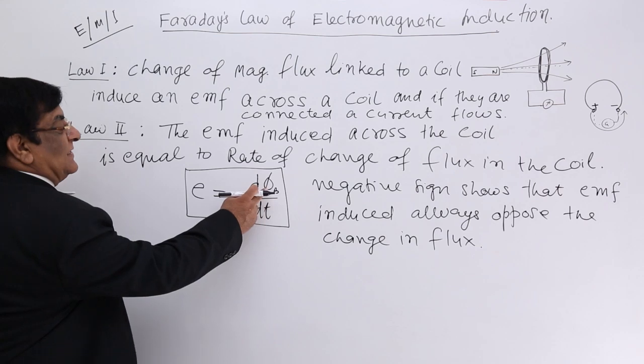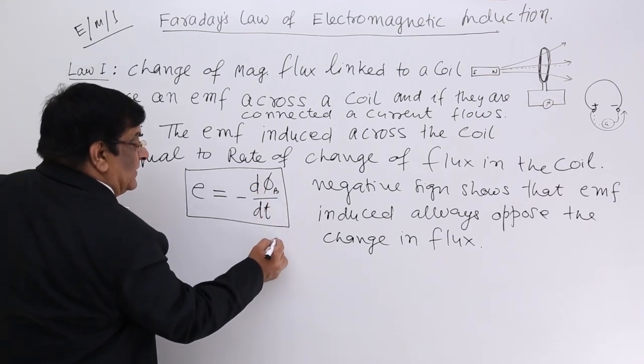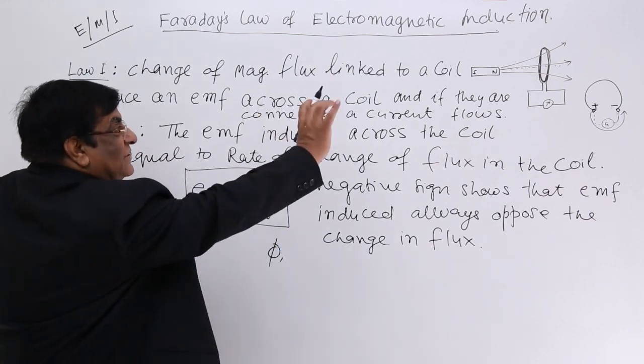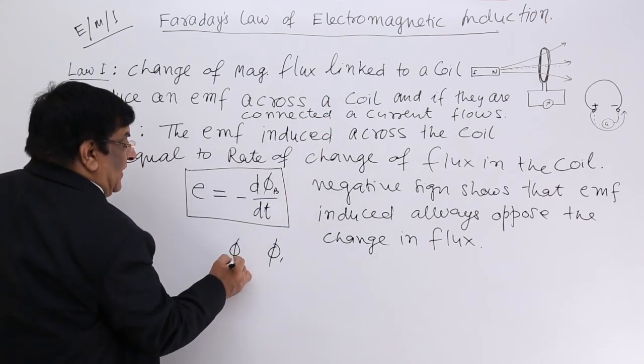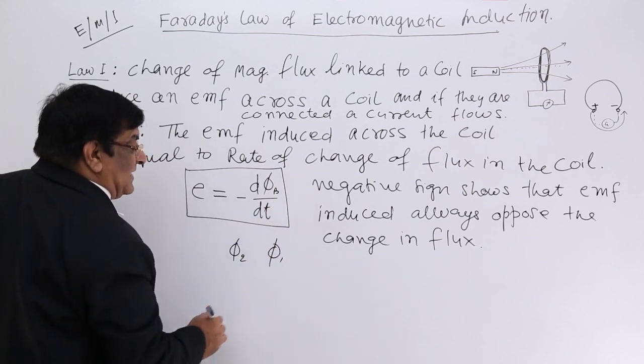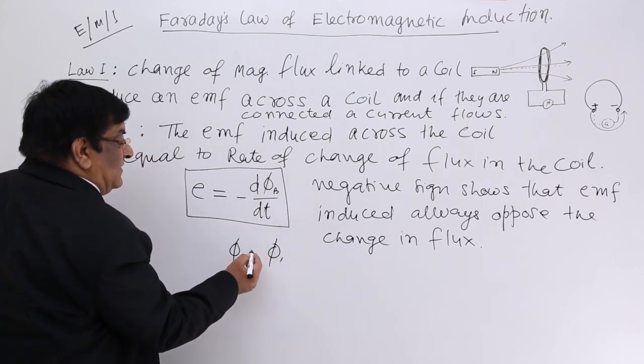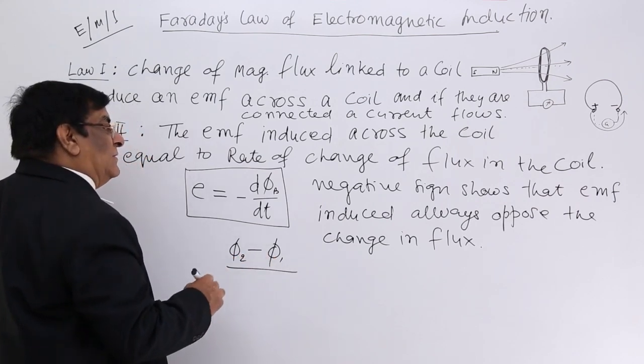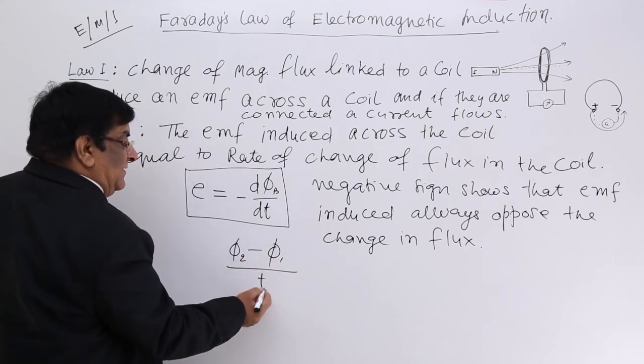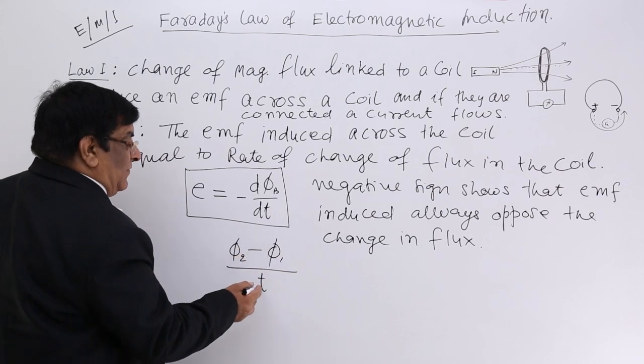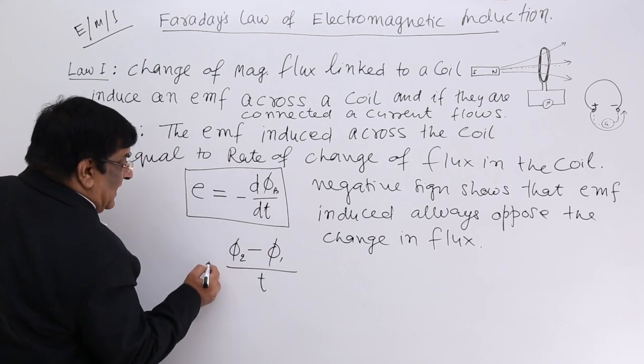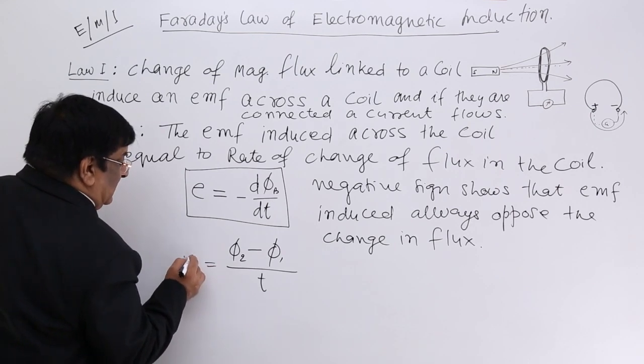If the flux changes, we have definite values that flux was φ₁. Due to certain action, the flux has changed to φ₂ and that action has taken time t. Then what is the change in flux? φ₂ minus φ₁, and how much time it has taken? t seconds. Then (φ₂ - φ₁)/t. What is this?